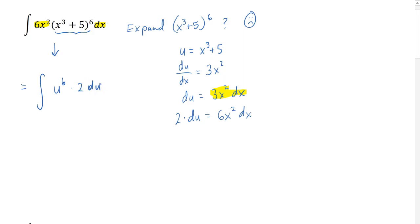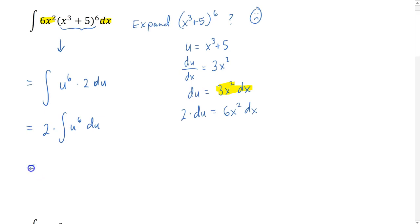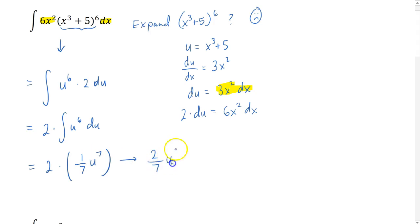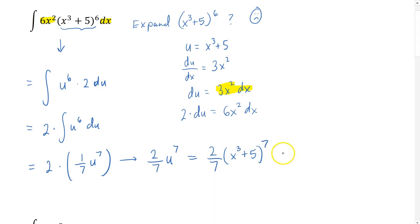This is my new integral, and notice it's much simpler. The 2 is a constant, so I can move it in front of the integral. Now I simply find the antiderivative of u to the sixth power: that's 1 seventh u to the seventh power. Multiplying by 2 gives 2 sevenths u to the seventh power. The only issue is it's not expressed in the correct variable, so I substitute back in: u becomes x cubed plus 5. Because this is an indefinite integral, I also add c. My final answer is 2 sevenths times the quantity x cubed plus 5, raised to the seventh power, plus c.